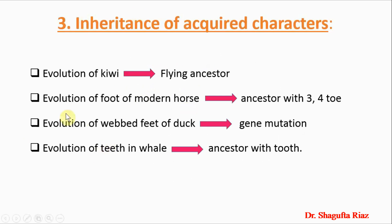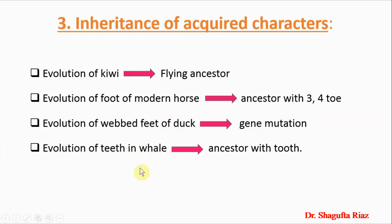Other examples given by Lamarck include the evolution of the kiwi — a flightless bird whose ancestors were flying birds. The evolution of the foot of the modern horse: today's horse has only one toe, but its ancestors had three to four toes. The evolution of webbed feet in ducks, believed to be due to gene mutation. And the evolution of teeth in whales — today's whales are toothless, but their ancestors had teeth.